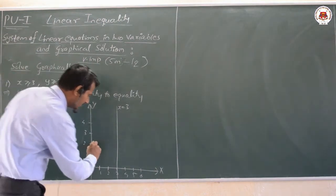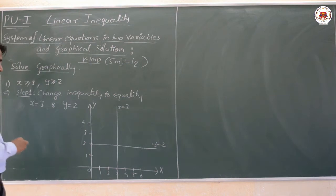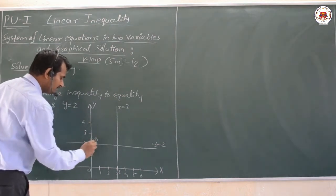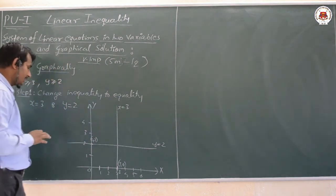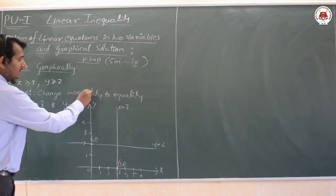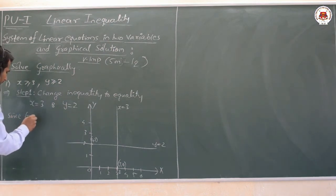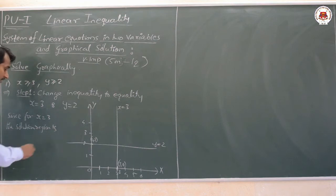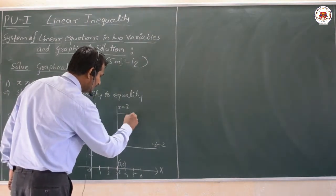The second line is y = 2, a horizontal line. Now we find the solution region for both lines. The point (3, 0) is on the x-axis and (0, 2) is on the y-axis. For x ≥ 3, the solution region is away from the origin, since 'greater than or equal to' means away from the origin.